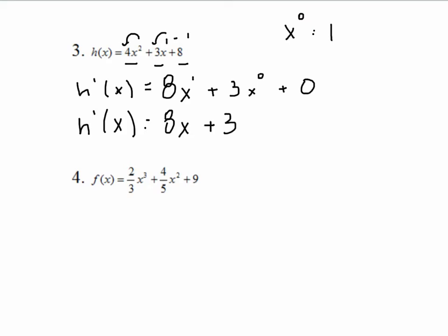In number 4, we don't have to do any rewriting in number 4, because we can see we have coefficients and powers. I want to show you a good way to write this. So we're going to say the derivative, using our shortcut rule, 3 times 2 thirds.